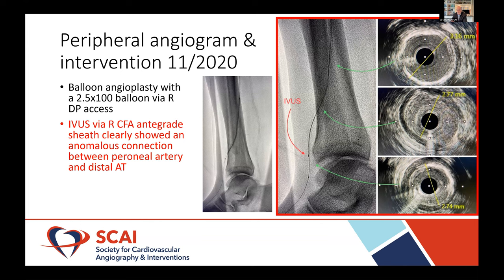The way the wire initially reacted on that anterograde cross, it didn't feel like a CTO — just felt different. And you can see calcification tracking over, which gave us a clue this may have been an anomaly — the way it transitions gradually, as opposed to what you see in collaterals, which is not so gradual. So we just gently ballooned it with a 2.5mm balloon to make some space for the IVUS, but didn't get aggressive with that balloon — just wanted to get some space. Definitely no substitute for experience and feel.